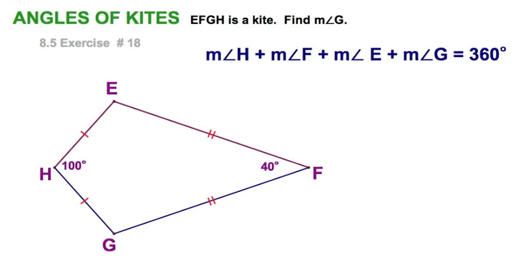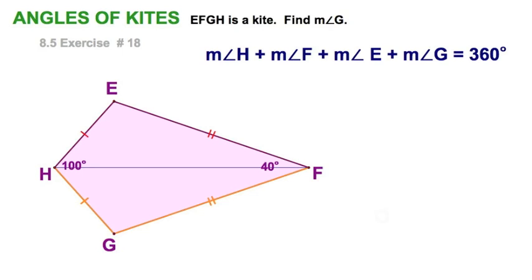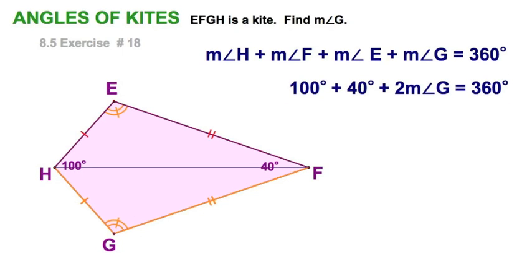Let's visualize this by splitting this figure into two triangles. And you can see by side-side-side, the two triangles are congruent. Of course that's true because we know that these two angles are congruent. Two of the angles of a kite are always congruent.